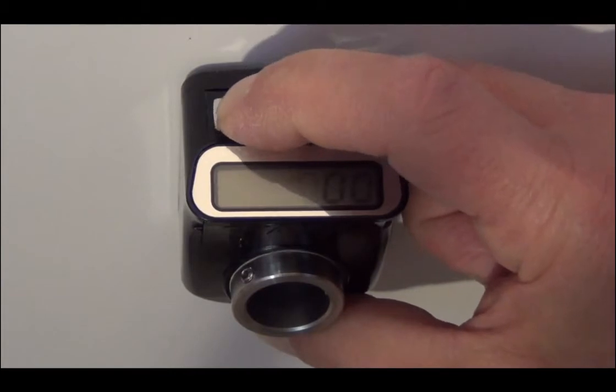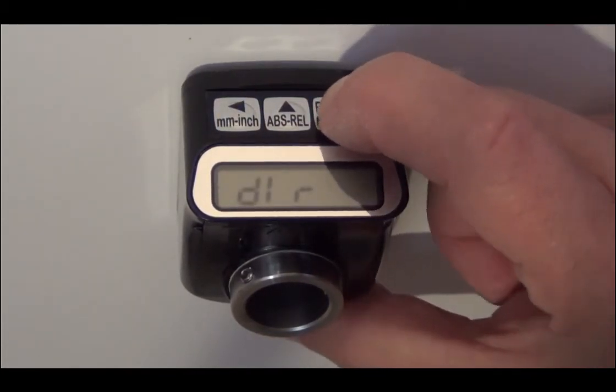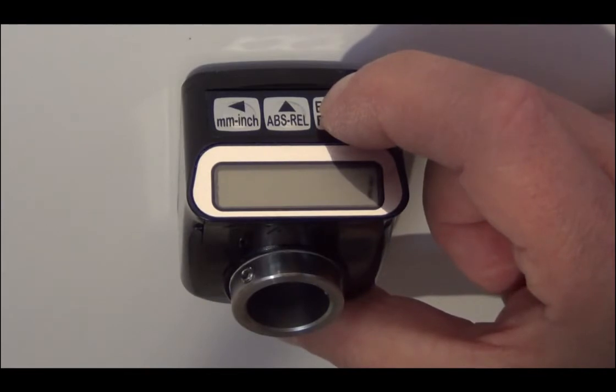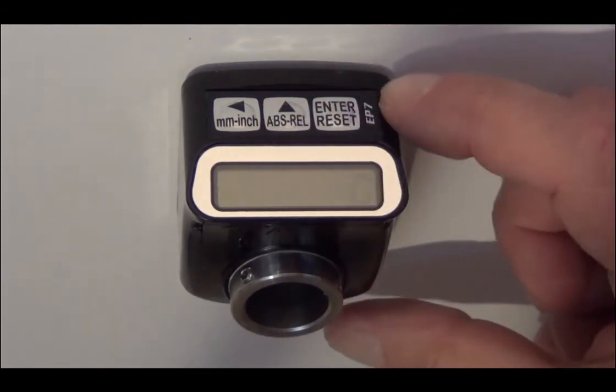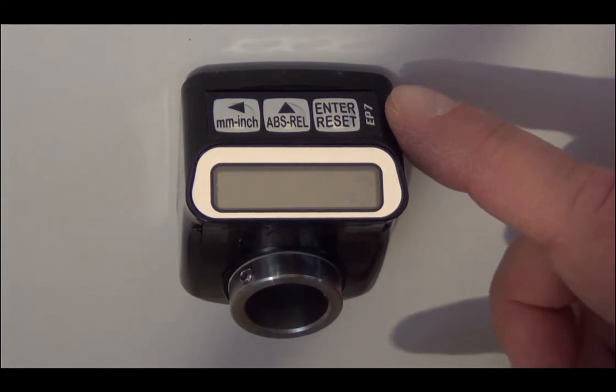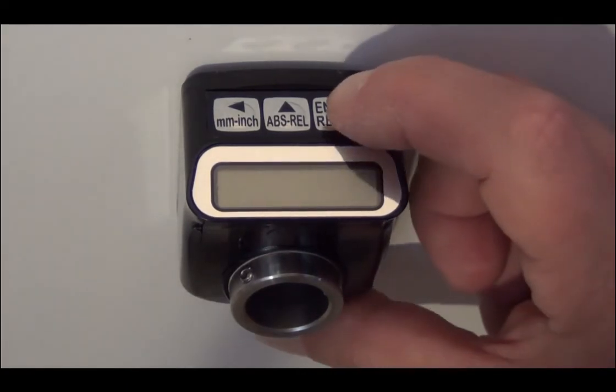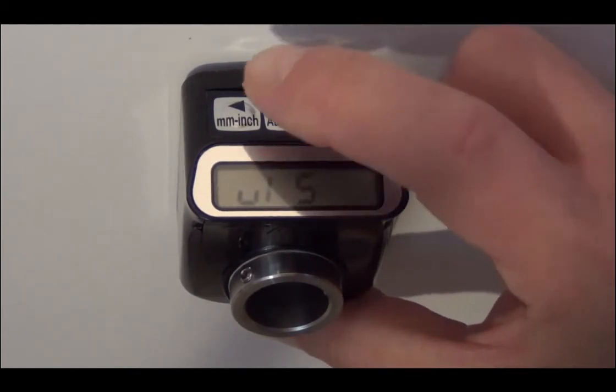DIR, or counting direction, will now be displayed. Depress ENTER twice. Once to initiate the programming mode, the second activates the least significant digit of the direction entry. Use the COUNT UP button to select either 0 or 1, 0 for clockwise-increasing count direction, and 1 for counter-clockwise-increasing count direction. Depress ENTER when complete.